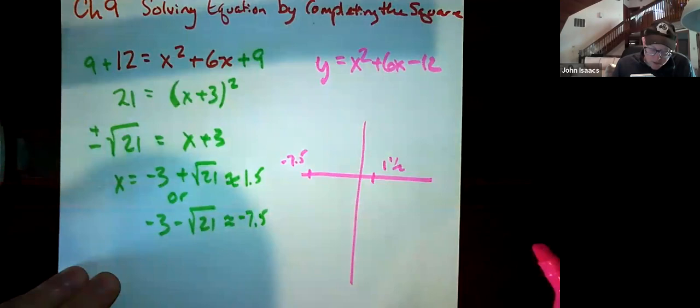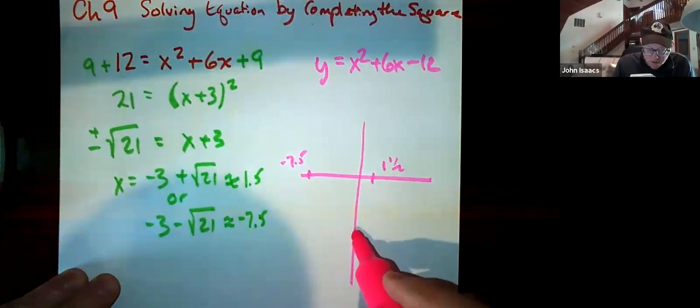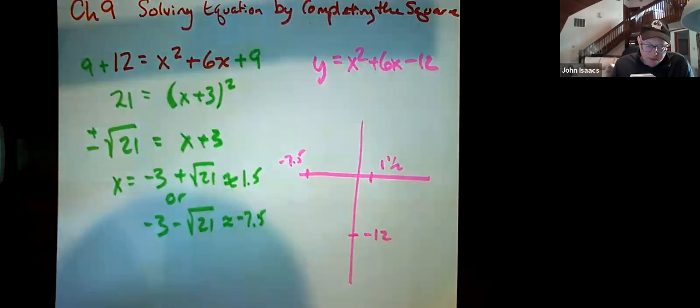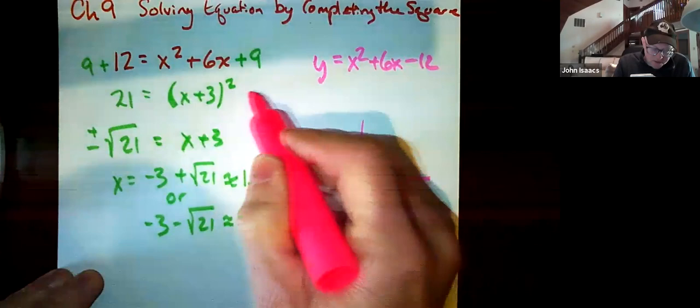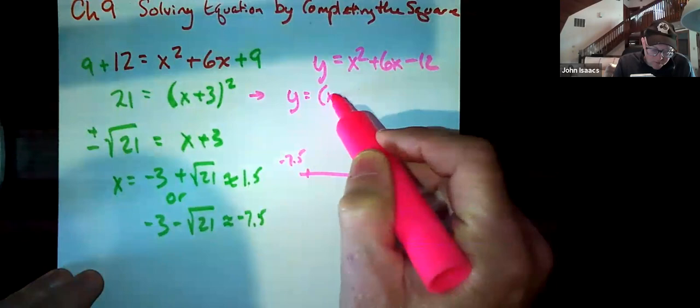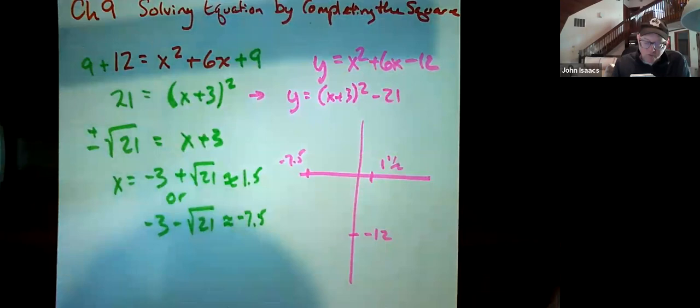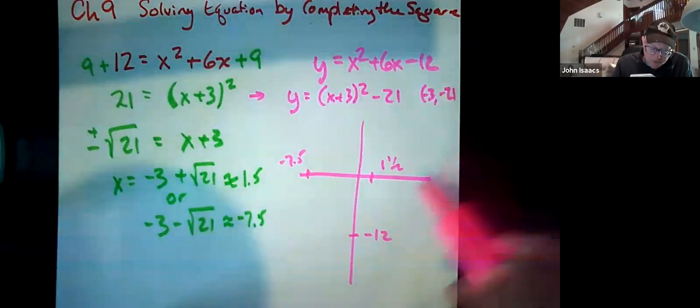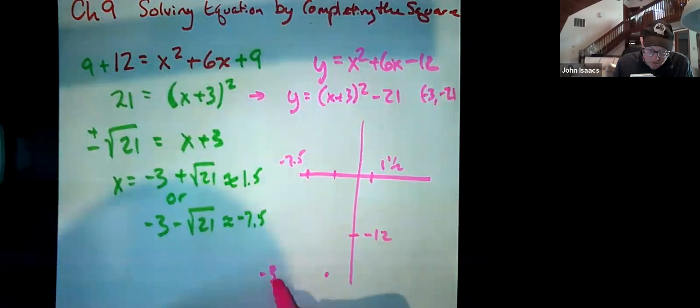We're also going to figure from this form here, this negative 12 is our y intercept. And you can also get your vertex because this is kind of in vertex form. If you think about this, this relates to y equals x plus three quantity squared minus 21. So your vertex here is negative three, negative 21 down here at the bottom, negative three, negative 21.